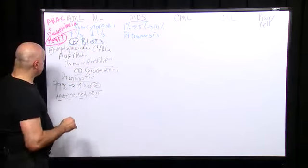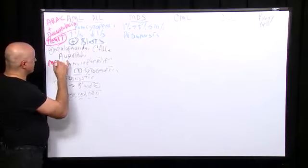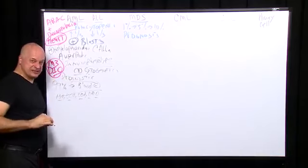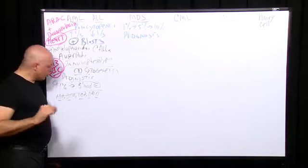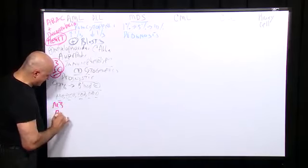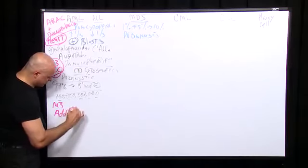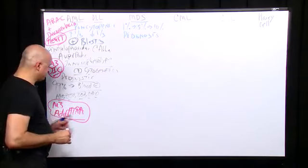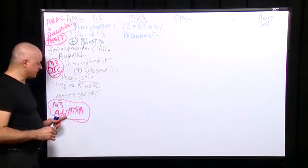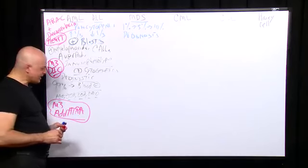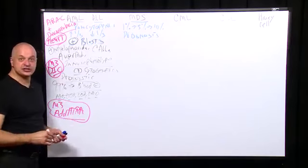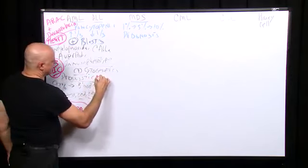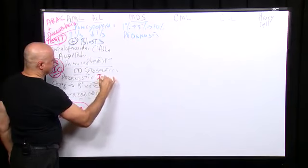What's different is that M3 promyelocytic leukemia causes DIC. What's unique about M3 is that you add all-trans retinoic acid to the treatment. The same retinoic acid you wouldn't use for your acne — you can use for your leukemia.